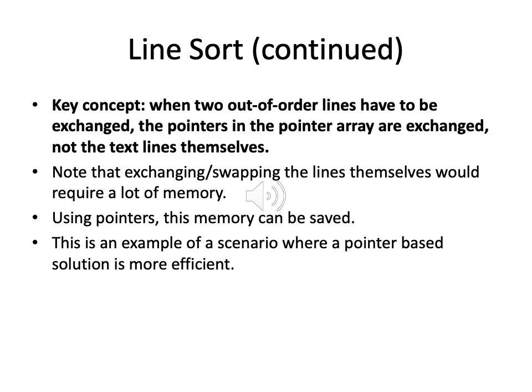With quicksort, when we have two out-of-order array elements we swap them. Same thing happens here — the only difference is the array elements are not integers but pointers to text lines, and as variables they can be swapped. Note that exchanging the lines themselves would require a lot of memory, because you'd have to copy to a temporary block and depending on line size that could be substantial — many characters. Whereas here you are only copying a single pointer variable. Using pointers, this memory can be saved — this is an example where a pointer-based solution is much faster and more memory efficient.